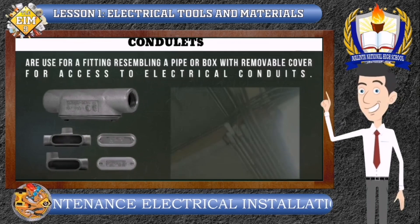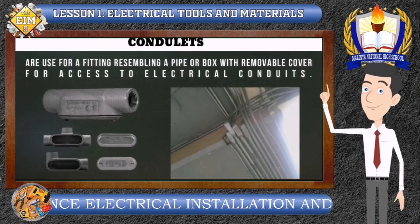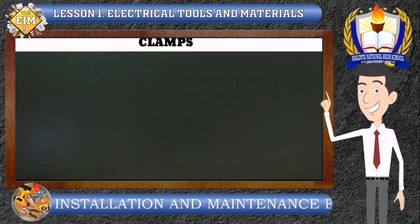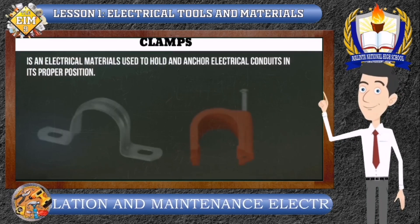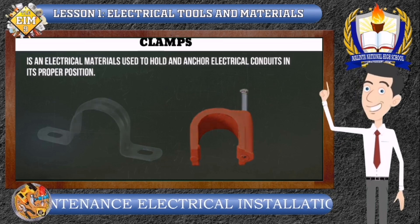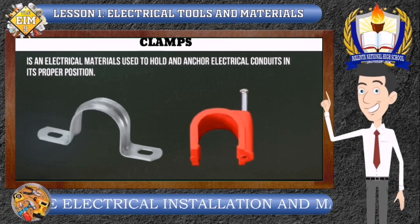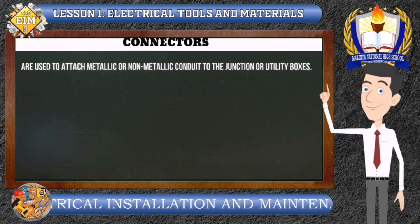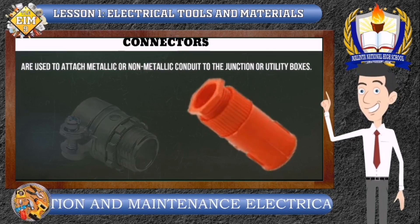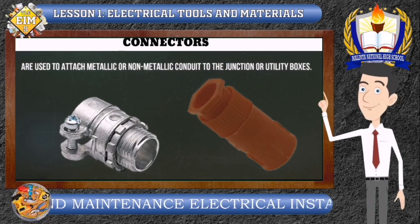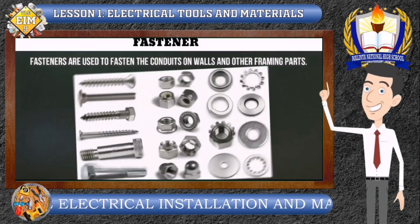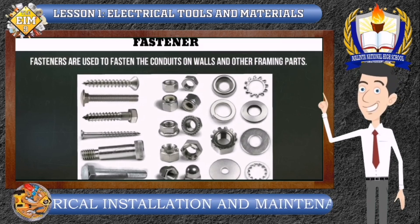Conduit fittings resemble a pipe or box with a removable cover for access to electrical conduits. Clamps. Clamps are electrical materials used to hold and anchor electrical conduits in their proper position. There are two types: metal clamp and plastic clamp. Connectors. Connectors are used to attach metallic or non-metallic conduit to junction or utility boxes. We have metal connectors and flexible non-metallic connectors. Fasteners. Fasteners are used to fasten conduits on walls and other framing parts.